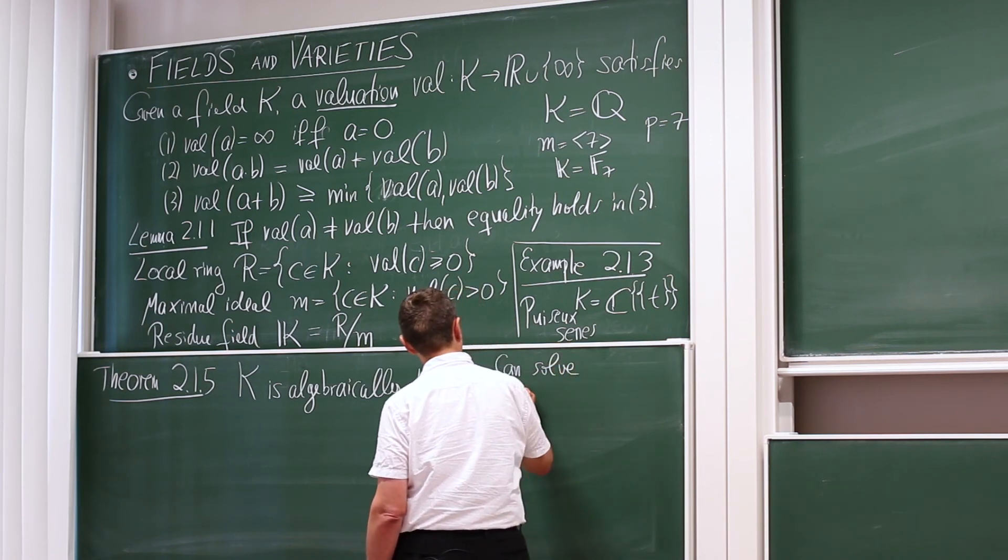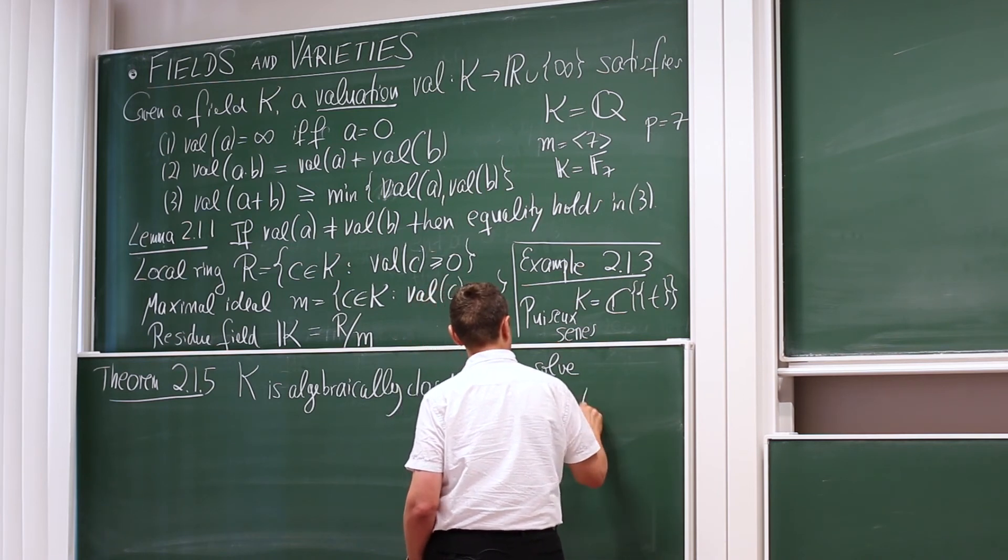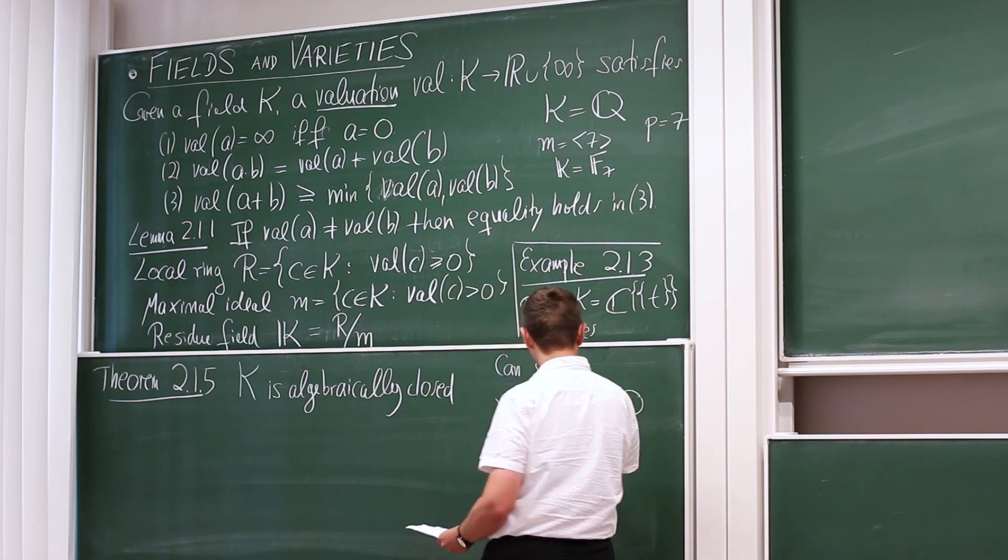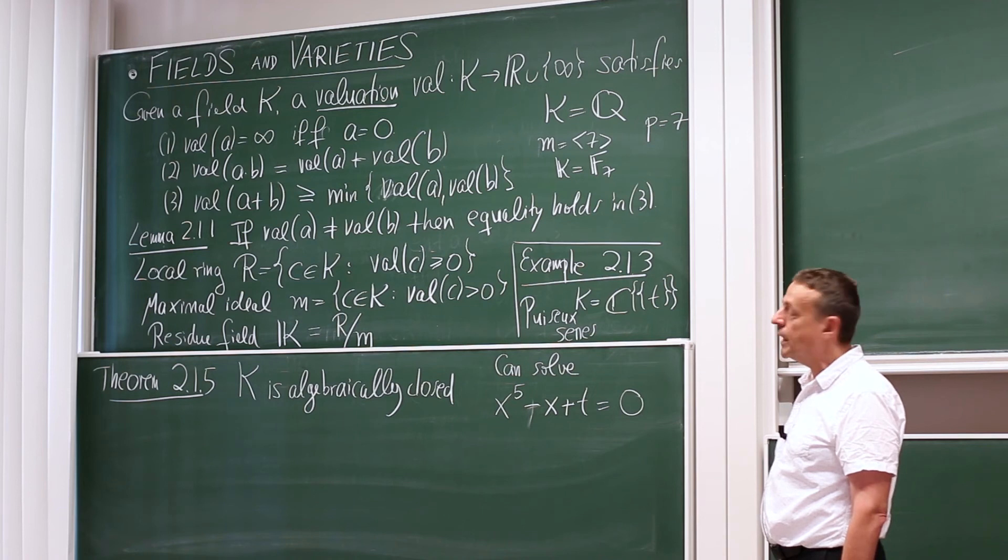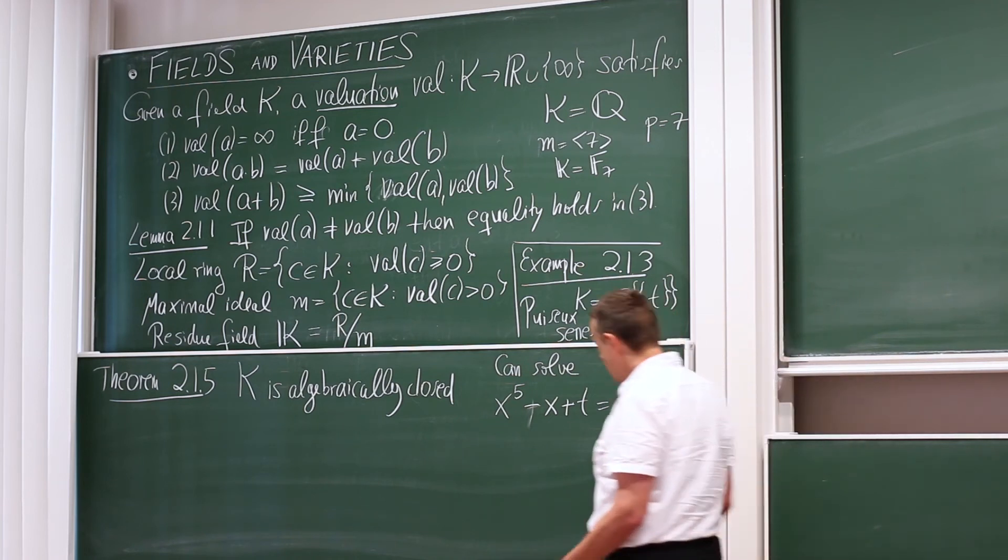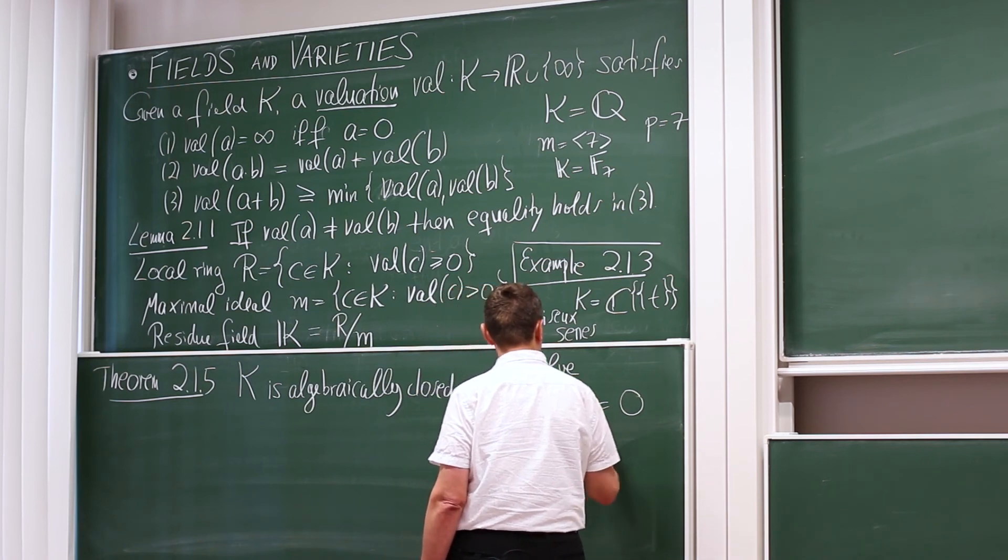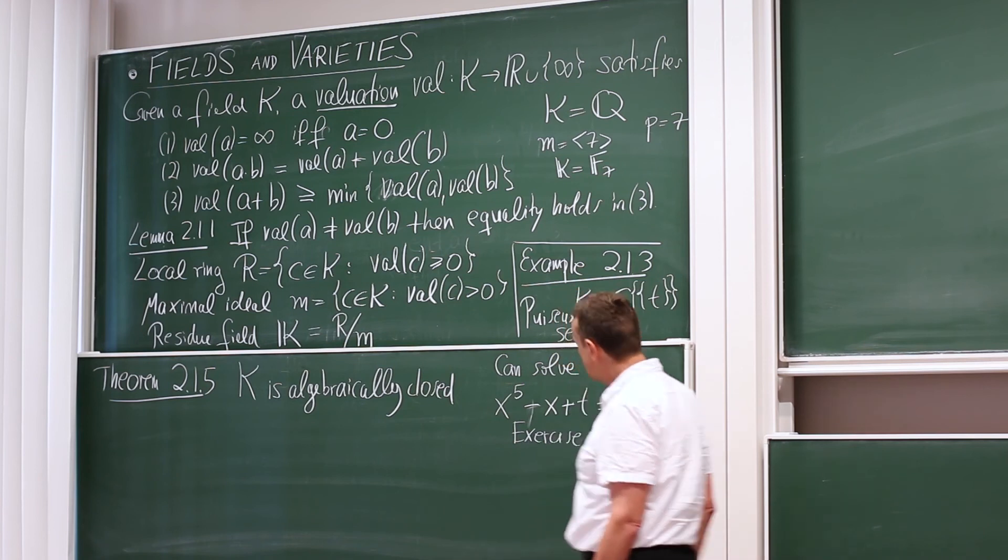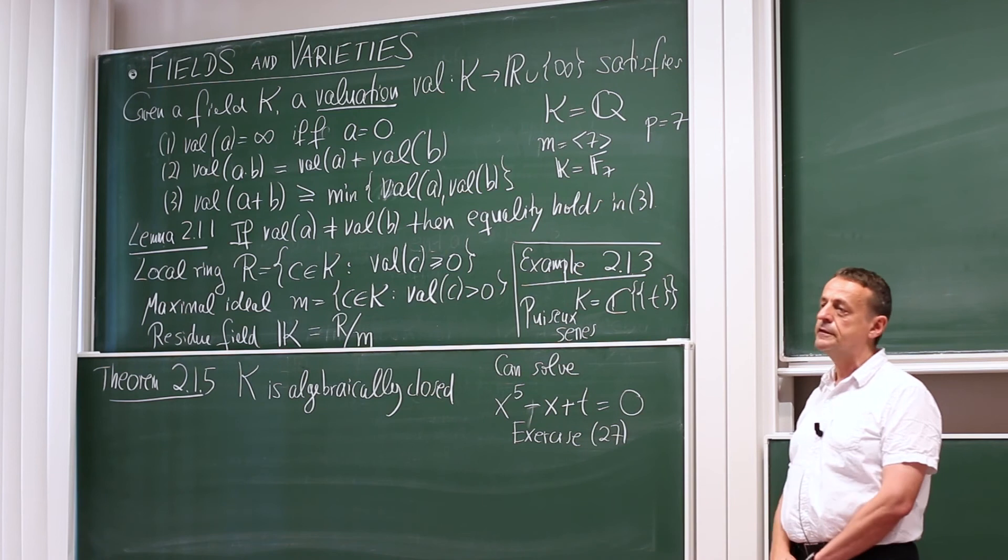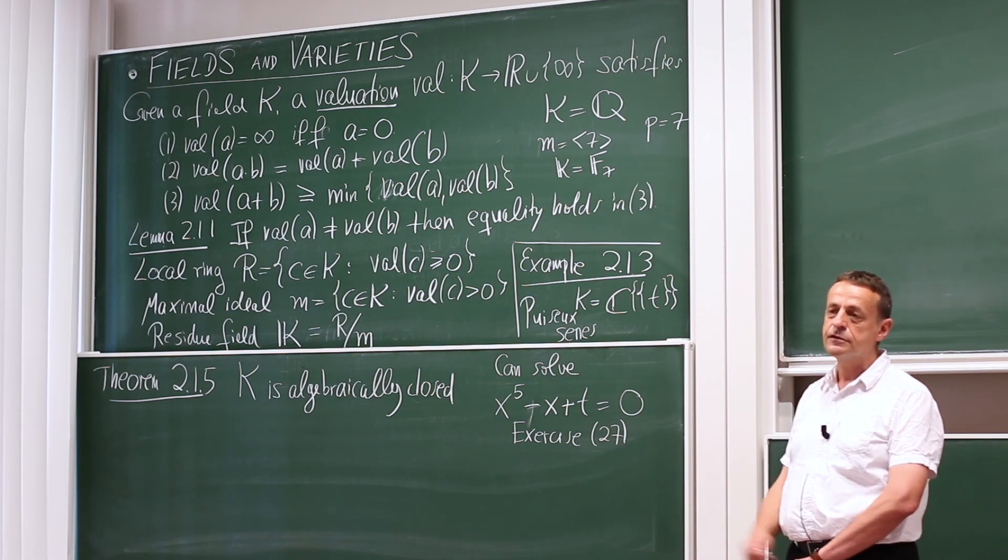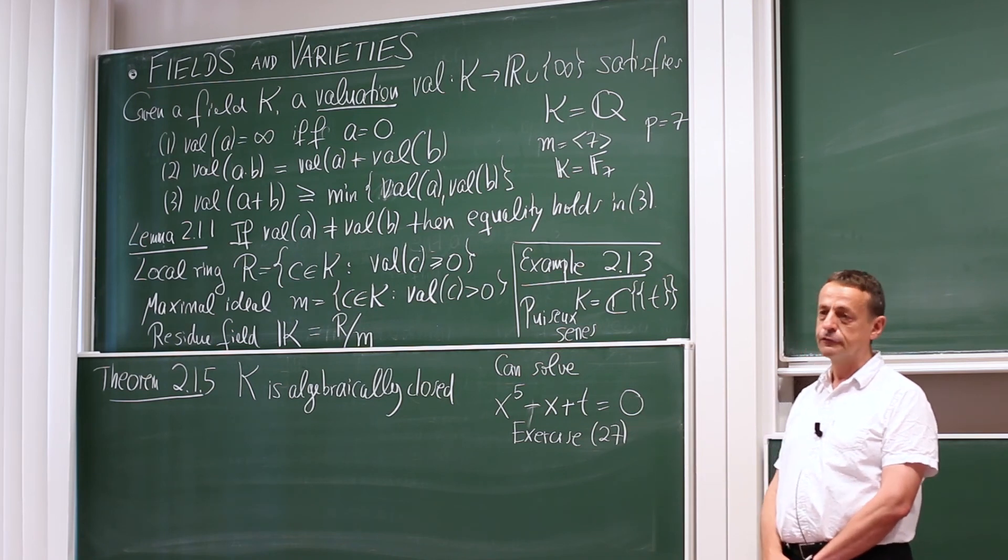So we might have an equation like x to the fifth plus x, or minus x plus t equals 0. So x is the unknown. The coefficients, the scalars, are 1, minus 1, and t. And you can practice this in the exercises, so exercise 27 has additional examples. So what this says is that this polynomial has five roots in this field, and these five roots are formal power series in t with exponents that might have denominators, like 5, for example.